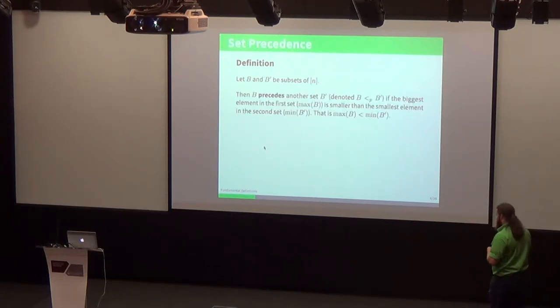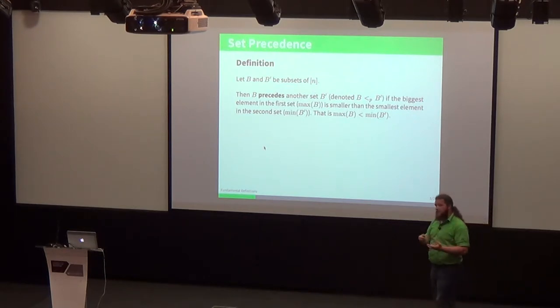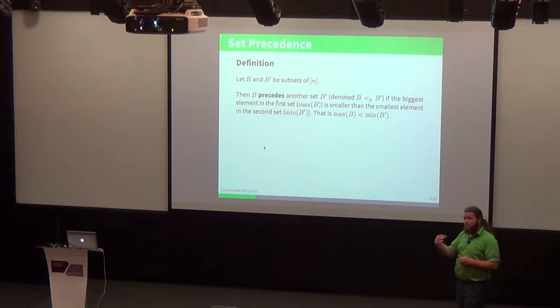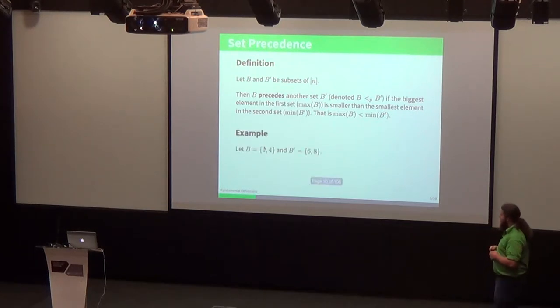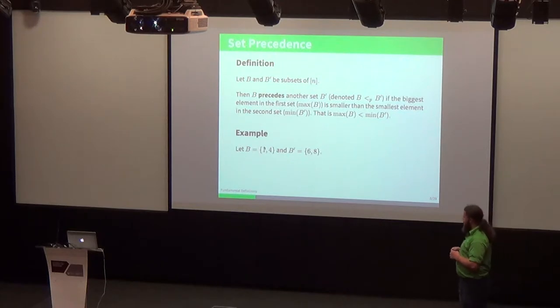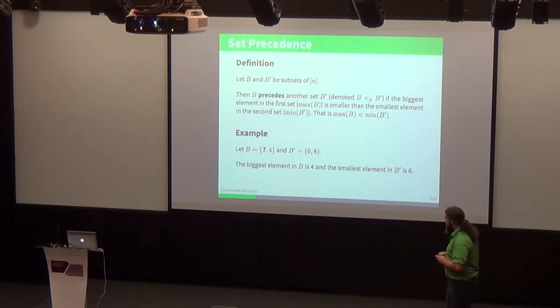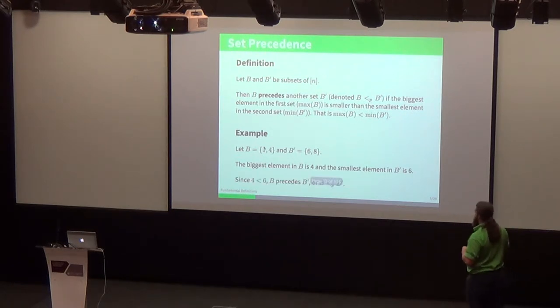Next we have set precedence. If we have two integer sets, we say that one precedes another if the largest element in our first set is smaller than the smallest element in our second set. Using the same coloring, let's say B is 1 and 4, and B prime is 6 and 8. Our largest element in B is 4, our smallest element in B prime is 6. Since 6 is larger than 4, set B precedes B prime. We use this notation with a less than sign with a subscript P to denote that.